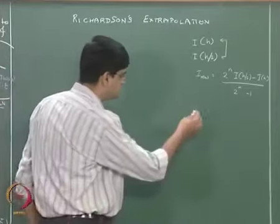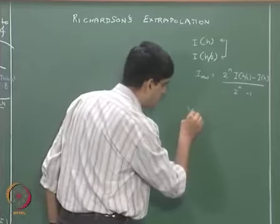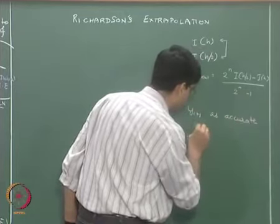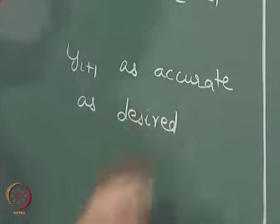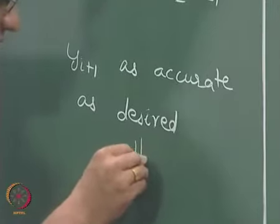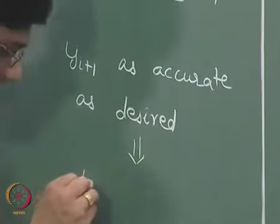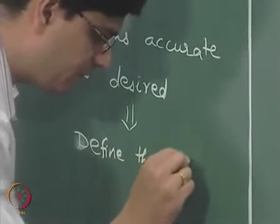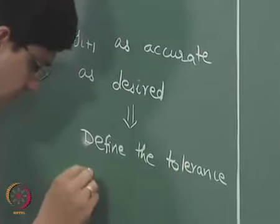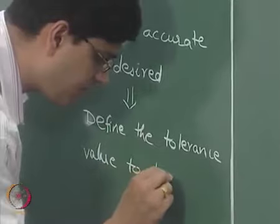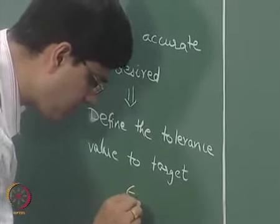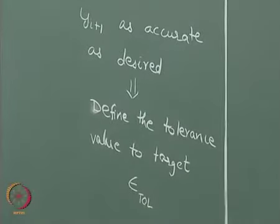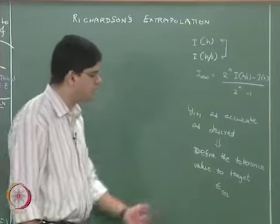The idea is we want to get y(i+1) as accurate as desired. What we mean by 'as accurate as desired' is that we need to define a tolerance value. We will call this epsilon-tol, that is the desired tolerance value or desired error value that we will prescribe.